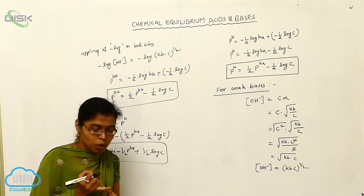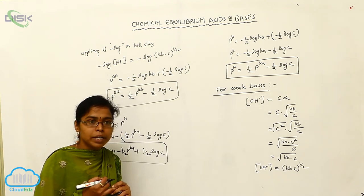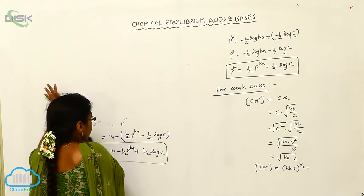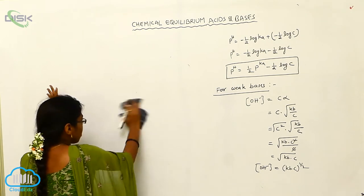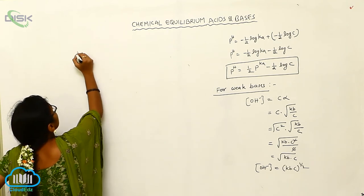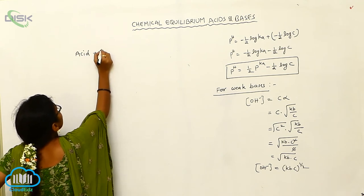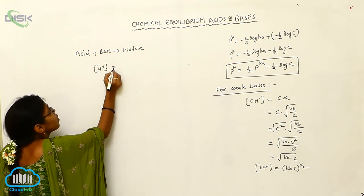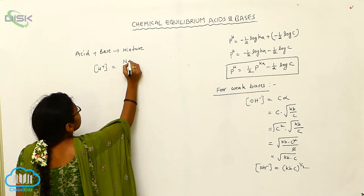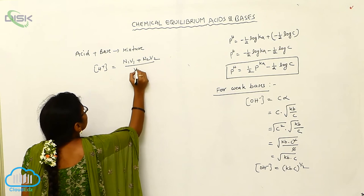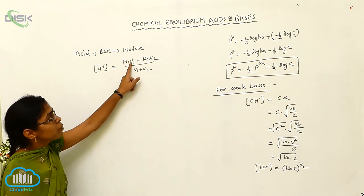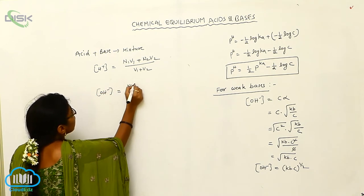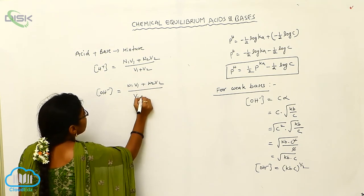Whenever you are taking strong acids, strong bases, weak acids, or weak bases, you must use normality and volume. For a mixture, the concentration of H⁺ ion is equal to N₁V₁ plus N₂V₂ divided by V₁ plus V₂. Here N₁V₁ refers to the acid and N₂V₂ to the base. Similarly, for OH⁻ in the mixture, we write the same formula: N₁V₁ plus N₂V₂ divided by V₁ plus V₂.